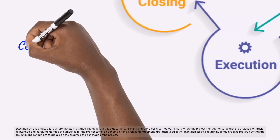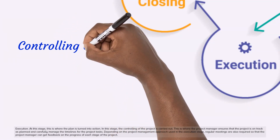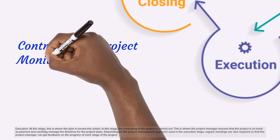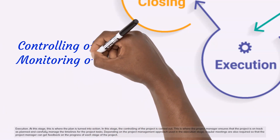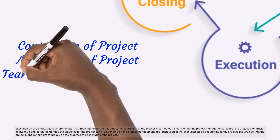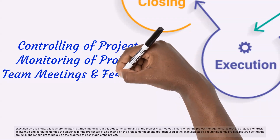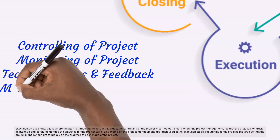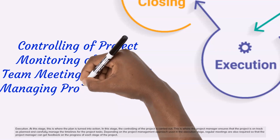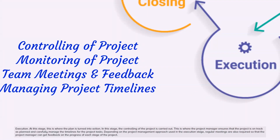Execution. At this stage, the plan is turned into action. The controlling of the project is also carried out here. This is where the project manager ensures that the project is on track as planned and carefully manages the timelines for the project tasks. Depending on the project management approach used in the execution stage, regular meetings are also required so that the project manager can get feedback on the progress of each stage of the project.